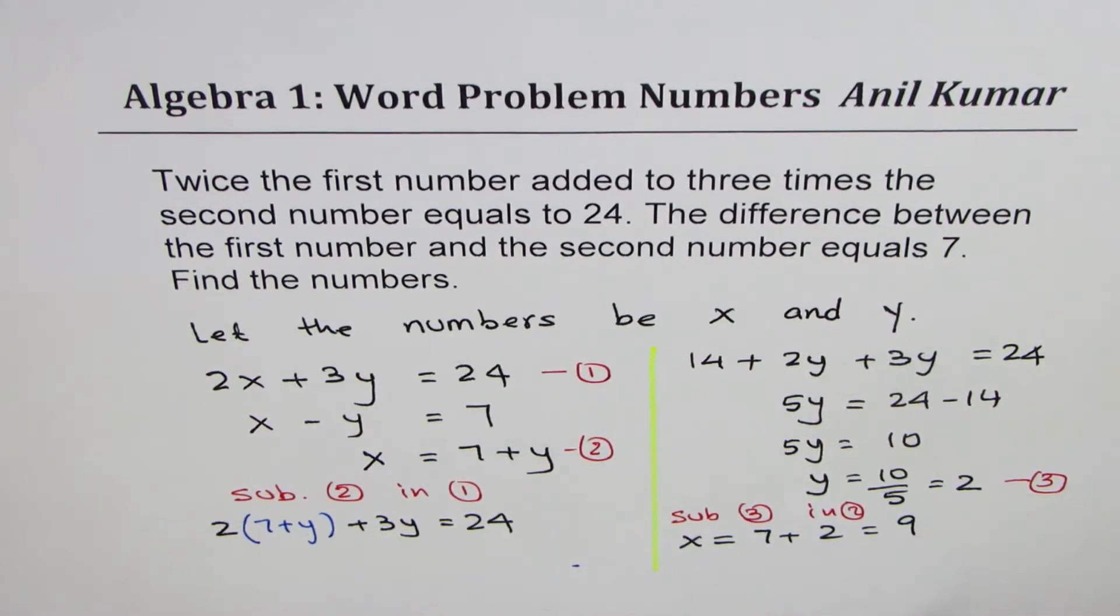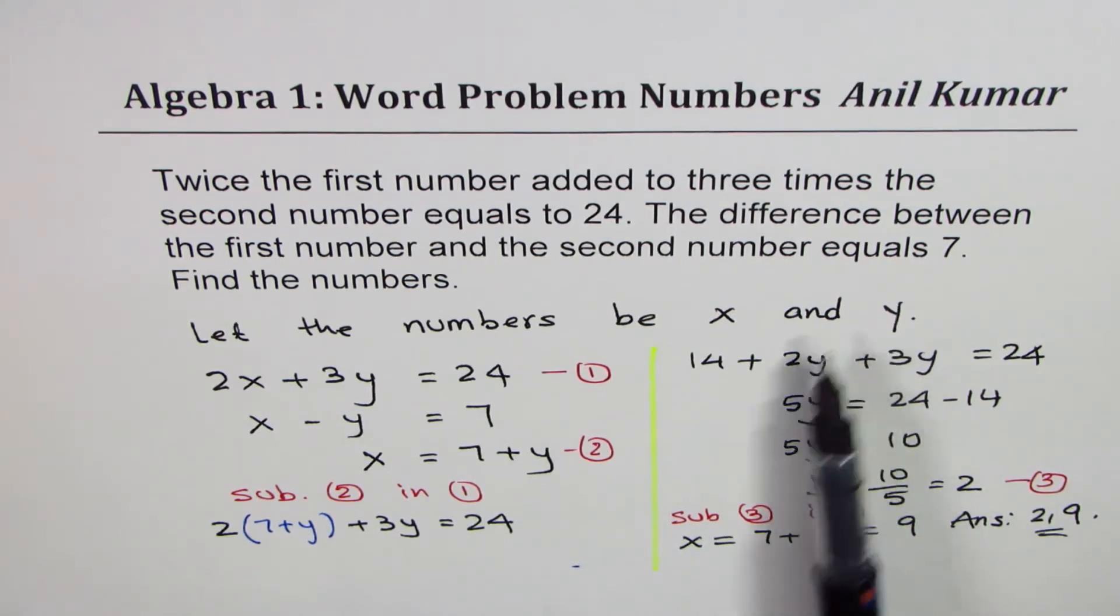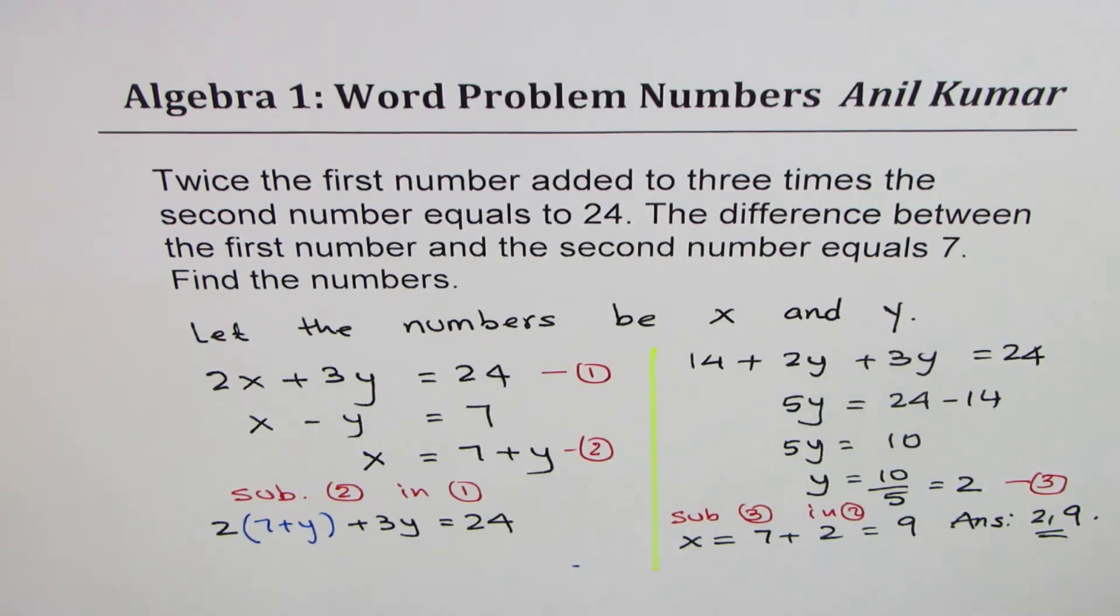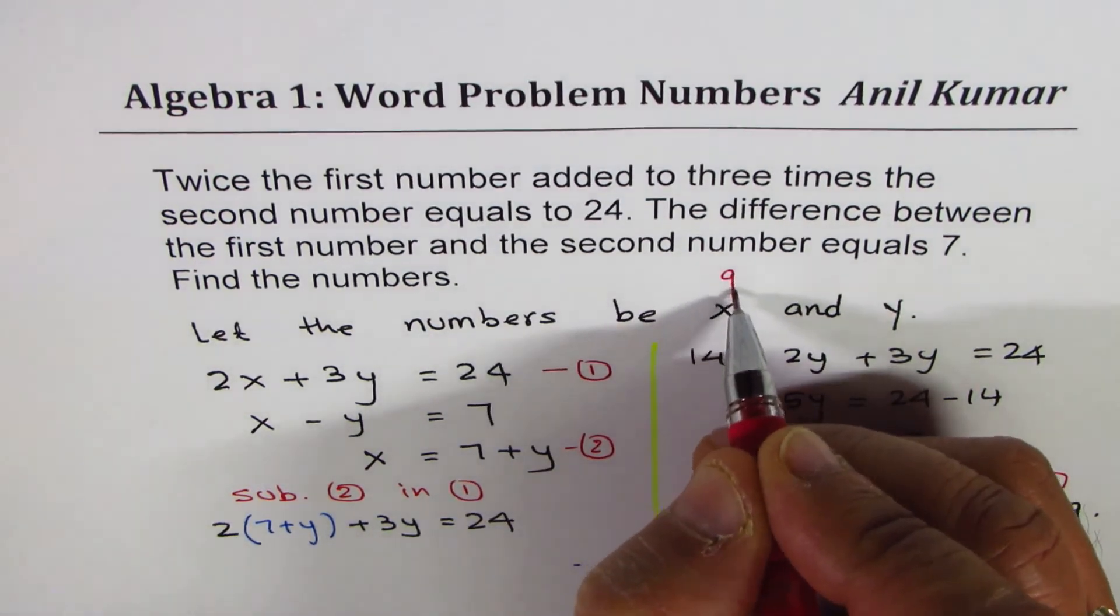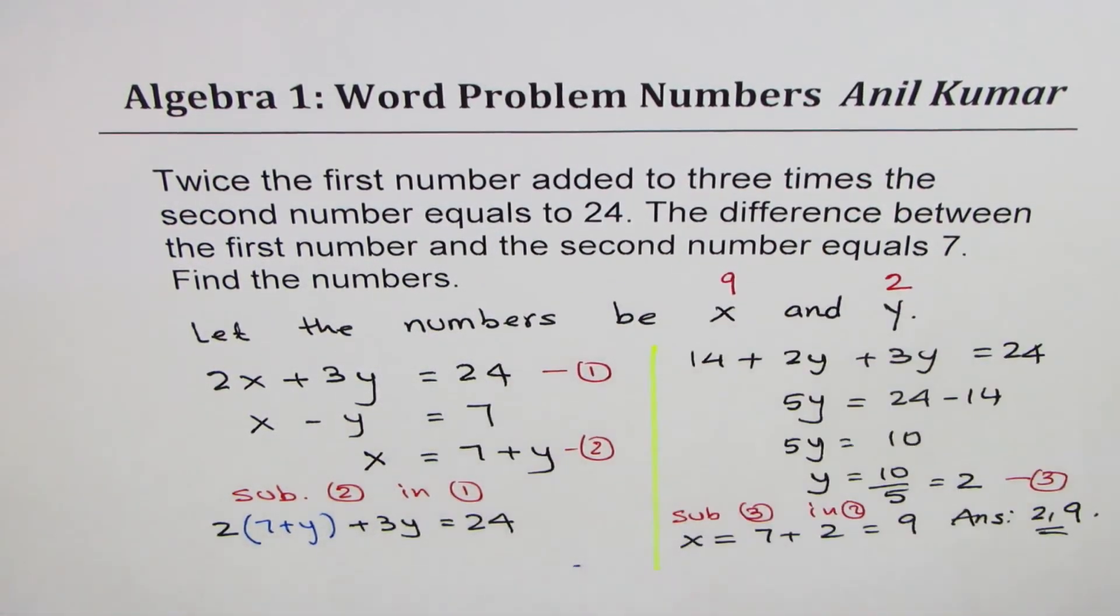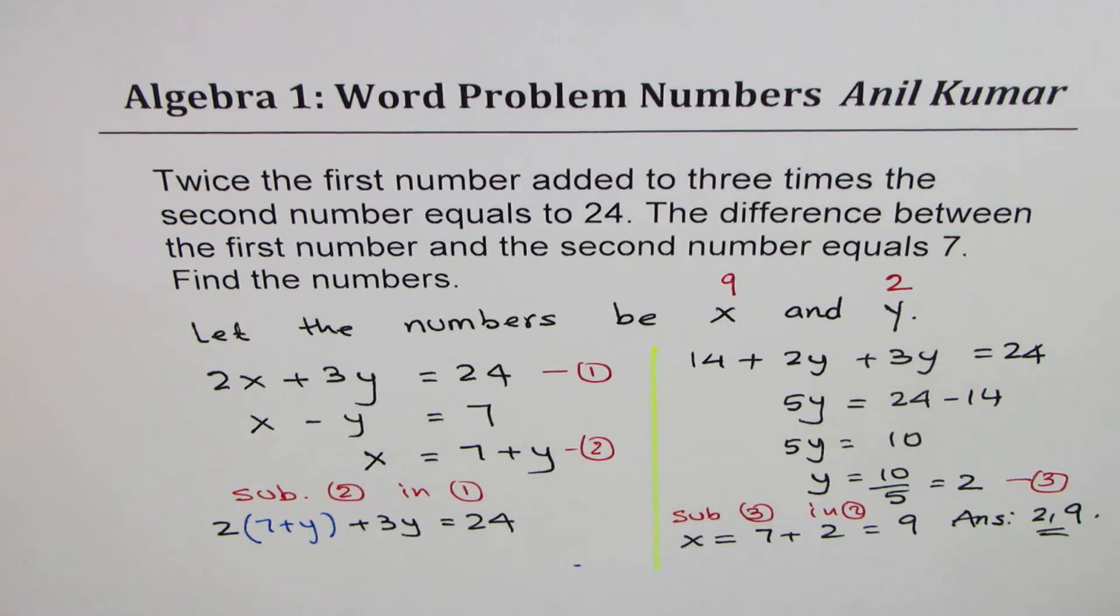And so we get our numbers. Let's write down the answer. The two numbers are 2 and 9. So these are the two numbers which we will work with. The first number will be 9, the second number is y which is 2. So what we got here is x is 9 and y is 2. So these are the two numbers which will satisfy the given condition.